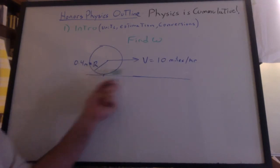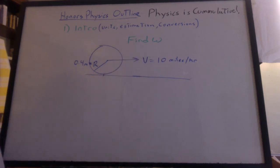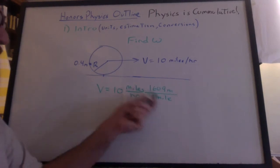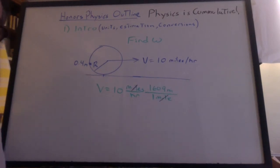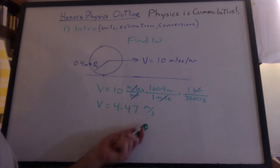Here's an example for conversions. The bicycle wheel was moving at 10 miles per hour. Find the angular velocity. Start with 10 miles per hour. Write it out with a factor label method. Miles cancel. Convert the hours to seconds.